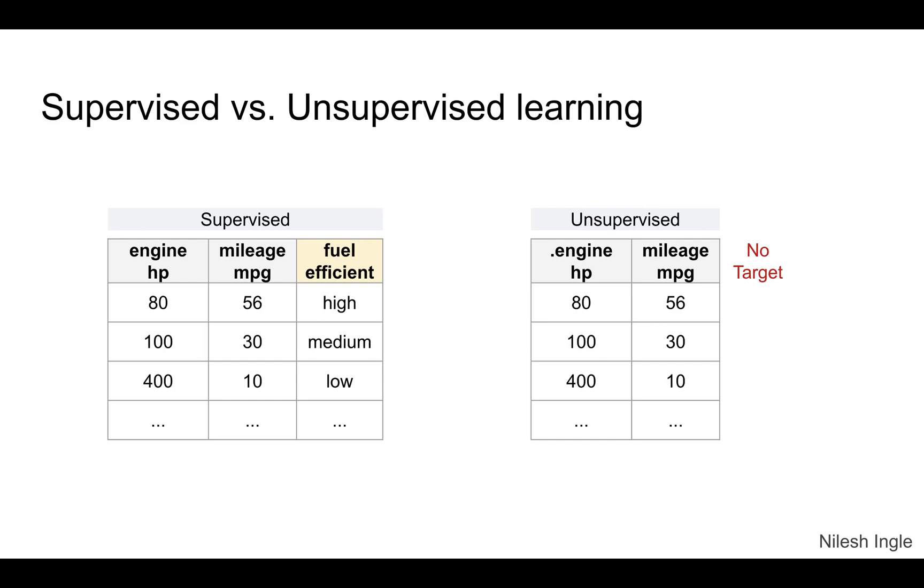Here is an example. On the left-hand side we have a dataset which has two features: engine horsepower and mileage in miles per gallon. The target here is categorical. We have a target that tells if each vehicle has high fuel efficiency, medium fuel efficiency, or low fuel efficiency. For example, the first vehicle has high fuel efficiency, the second has medium, the third has low.